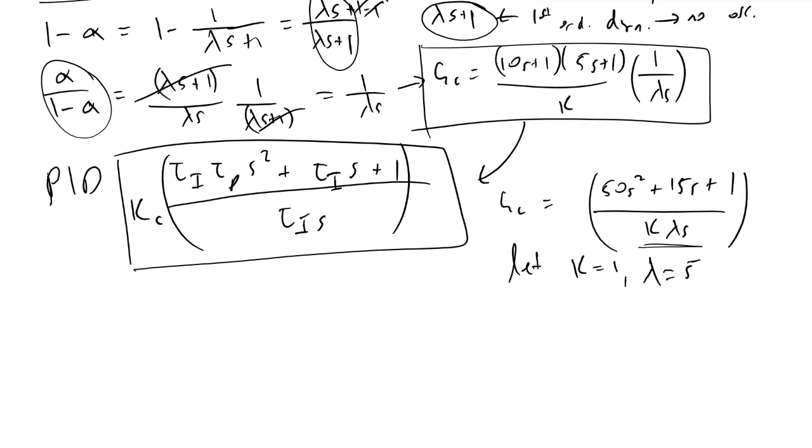And so in that case, what we'll find is that we'll get gc is equal to 50s squared plus 15s plus 1 divided by 1 times 5 times s. And this is not the form we necessarily want it in because we need to get some kind of kc and tau i value out front. And to do that, what we're going to do is multiply by 3 over 3 to get 15s in the denominator of gc.